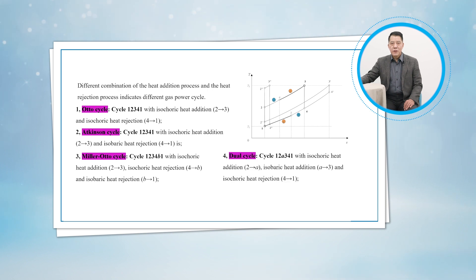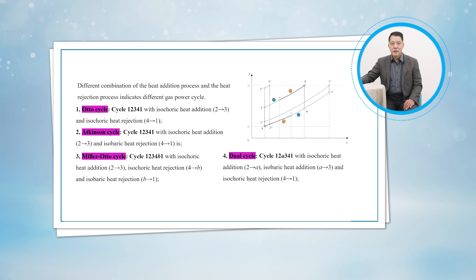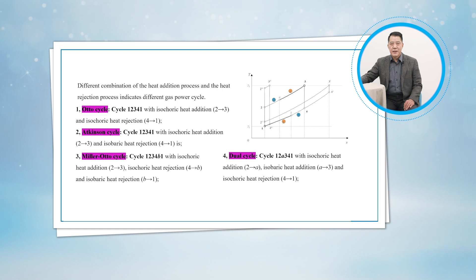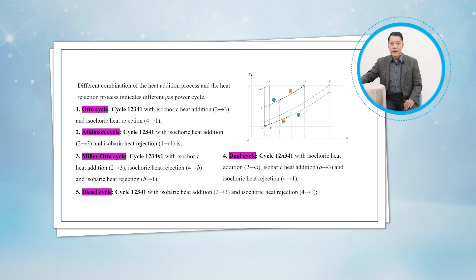The fourth one is the dual cycle, or Sabathe cycle, when cycle 1-2-3-4-1 is with both isochoric and isobaric heat addition, and isochoric heat rejection. This means in figure 10-38, state B is merged with state 1, and the dual cycle is the cycle 1-2-A-3-4-1.